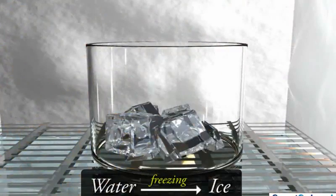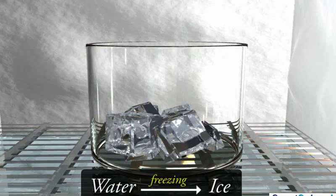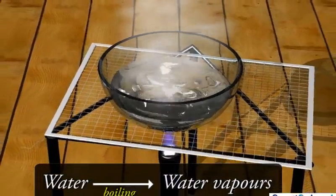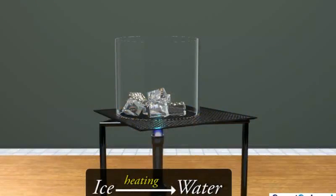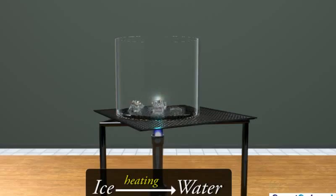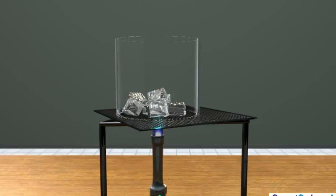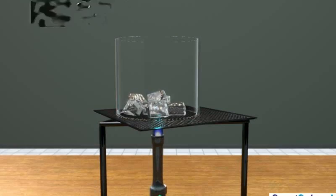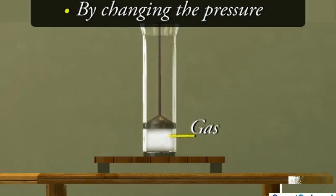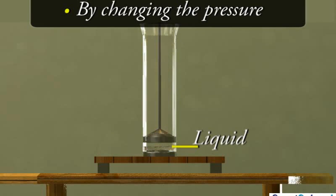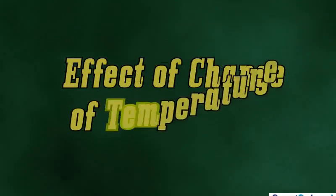The liquid state water can be converted into ice by freezing and similarly, the gaseous state water vapor can be achieved by boiling water. In a similar manner, ice can be converted into water by raising the temperature. We can thus infer that one state of matter can be converted into another state by changing the temperature and also by changing the pressure. But here we would restrict our discussion to the conditions of constant pressure. Let us now understand how temperature affects the state of matter.